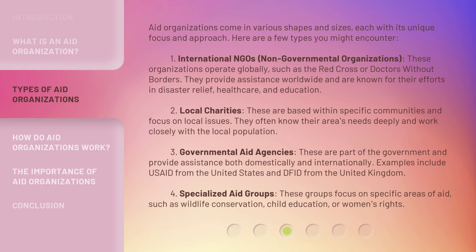Aid organizations come in various shapes and sizes, each with its unique focus and approach. Here are a few types you might encounter. One: international NGOs, or non-governmental organizations. These organizations operate globally, such as the Red Cross or Doctors Without Borders. They provide assistance worldwide and are known for their efforts in disaster relief, healthcare, and education. Two: local charities. These are based within specific communities and focus on local issues. They often know their area's needs deeply and work closely with the local population.